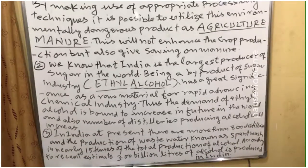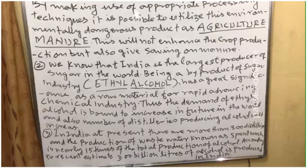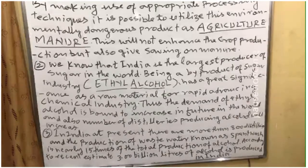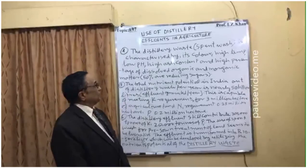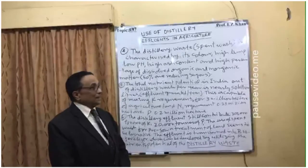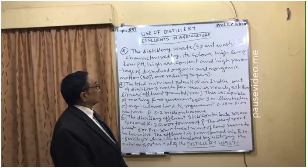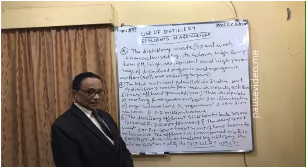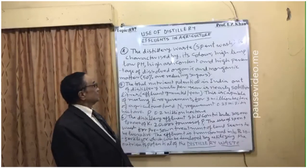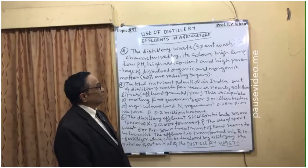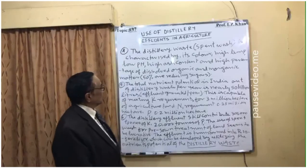Point four: the distillery waste, called spent wash, is characterized by its dark color, high temperature, low pH, high ash content, and a high percentage of dissolved organic and inorganic matter. This spent wash also contains about 50% reducing sugars.